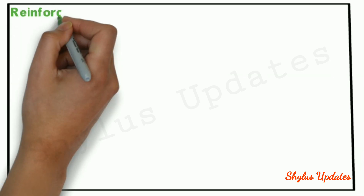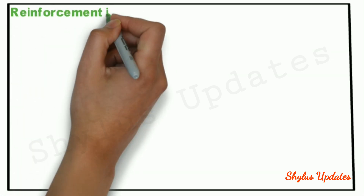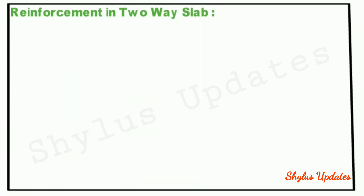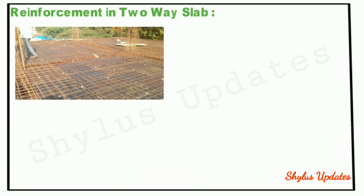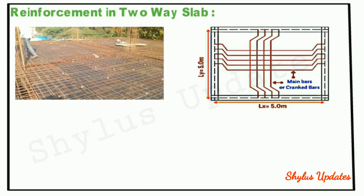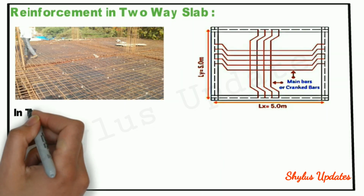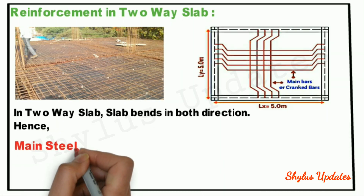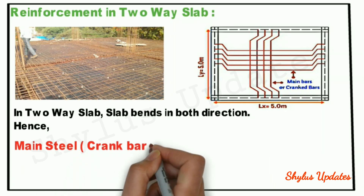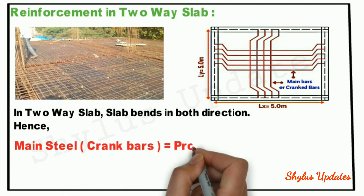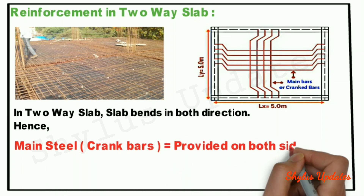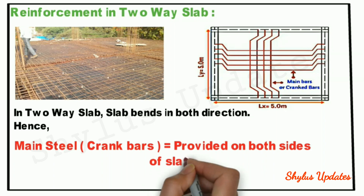Reinforcement in 2-way slab: In a 2-way slab, the slab bends in both directions. Hence, main steel — i.e. crank bars — are provided on both sides of the slab to counter this bending.